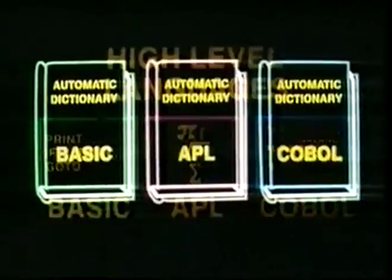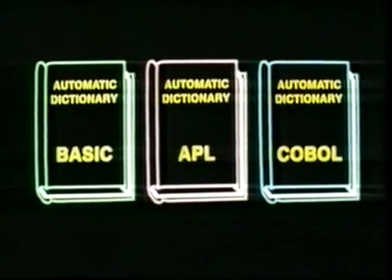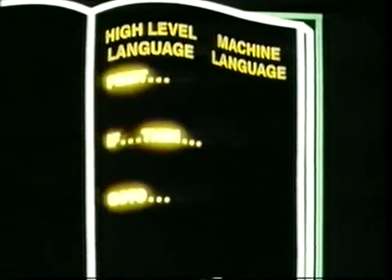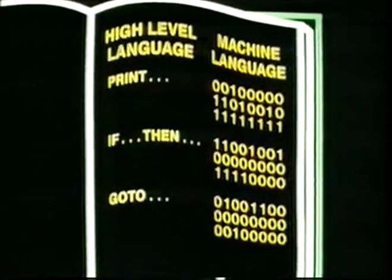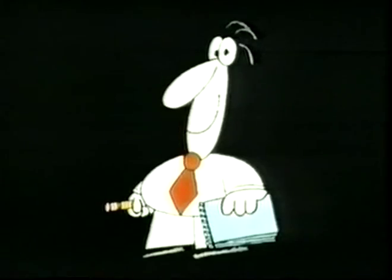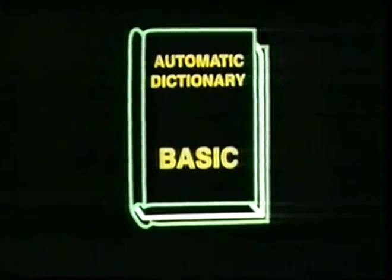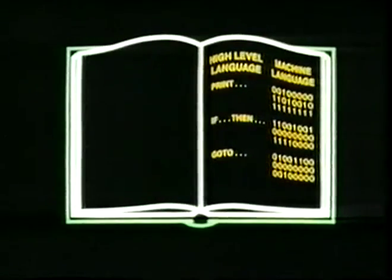And then they prepared automatic dictionaries which, just like English-French dictionaries, contained a list of all the vocabulary of the particular high-level language in one column, with its machine language equivalent in a second column. Then, whenever someone wanted to use a key word, or symbol, or procedure in the high-level language, this dictionary would look it up, find out what it meant in machine language, and pass this on to the computer.